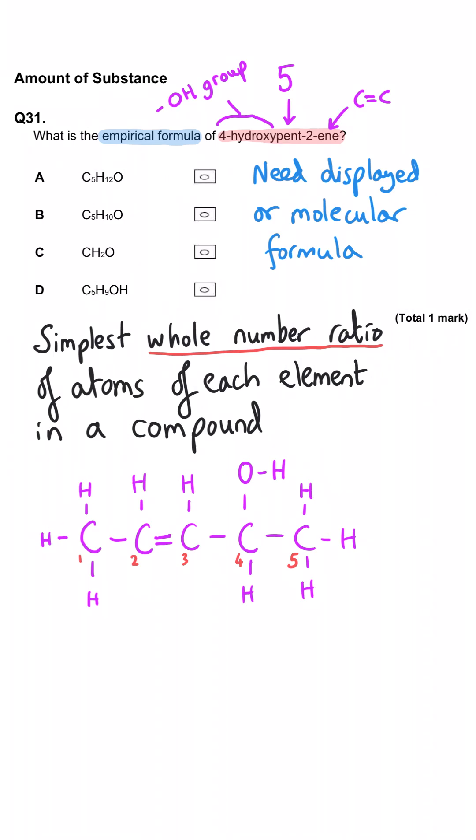And so its molecular formula, when we count up all the atoms, is C5H10O. We cannot simplify this ratio and make it any smaller at all because we've already got just the single one oxygen. And so the empirical formula is C5H10O. D is a decoy and that's because it's trying to give us the correct formula but show us that it is an alcohol. In an empirical formula, we don't give any indication as to what the functional groups are present in a particular compound, just the ratio of the atoms of each element.